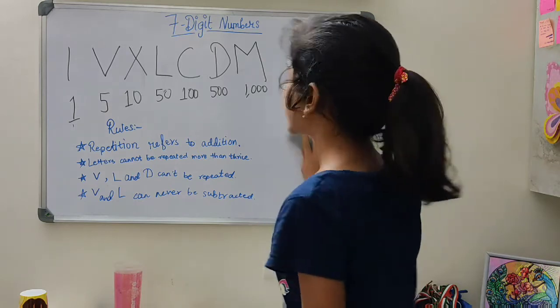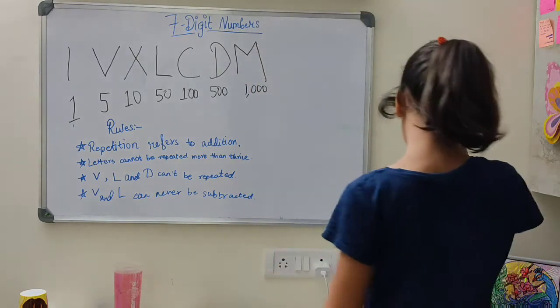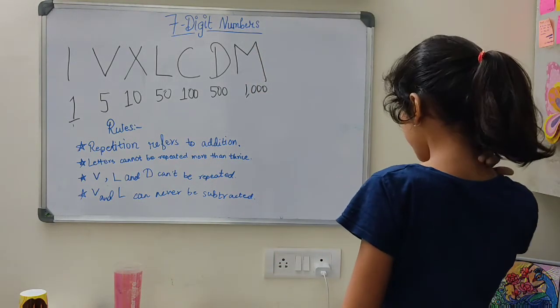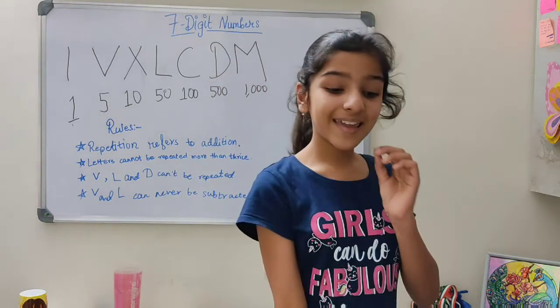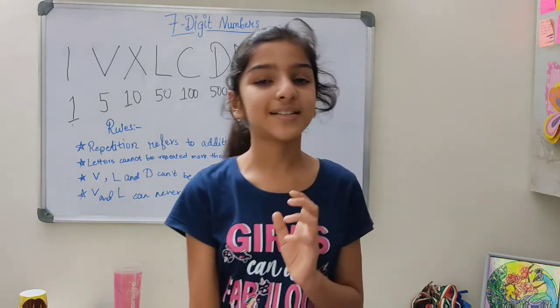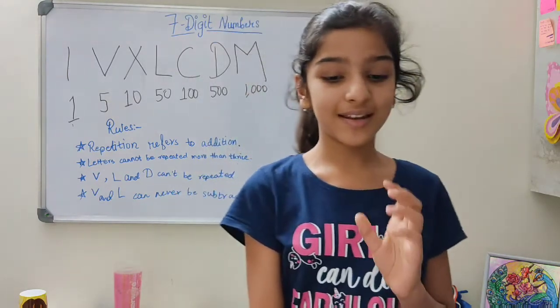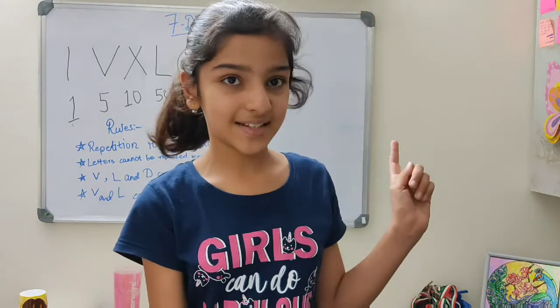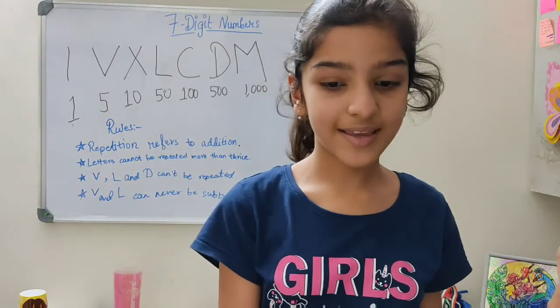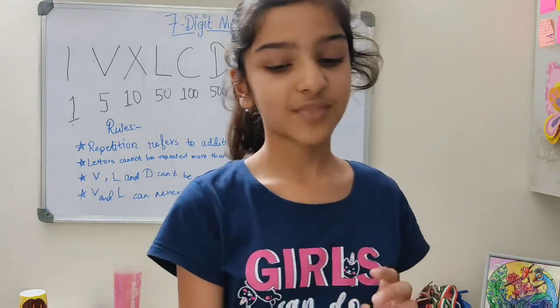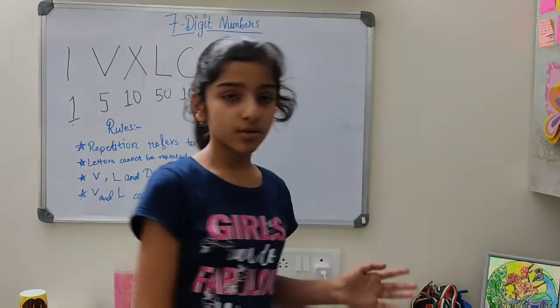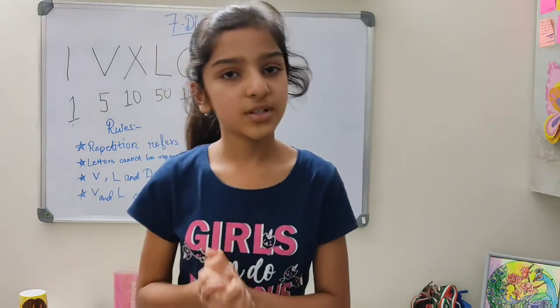These rules help you write your Roman numbers. Here is an interesting fact: the Indian system of numeration was developed in India around 100 BC and was spread to other countries by the Arabs. Hence it is named the Hindu-Arabic numeral system.